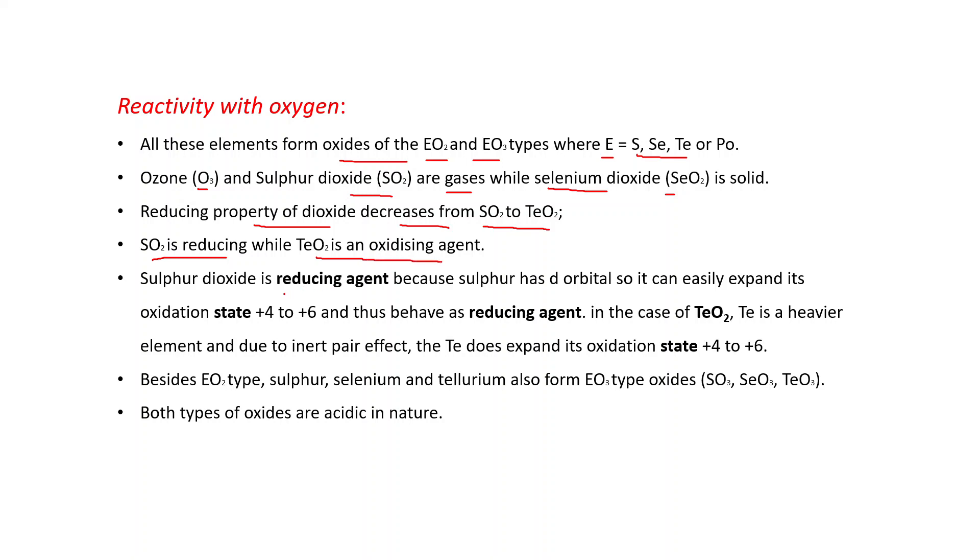Why? Sulfur dioxide is a reducing agent because sulfur has d orbitals. So it can easily expand its oxidation state from plus 4 to plus 6. Oxidation state increases, oxidation takes place. That's why it's a reducing agent.